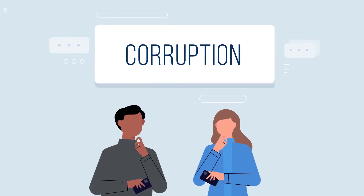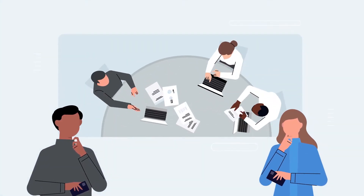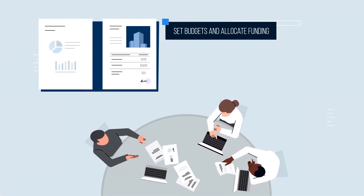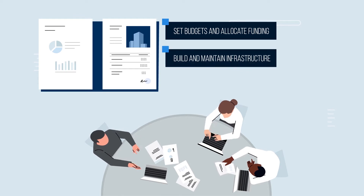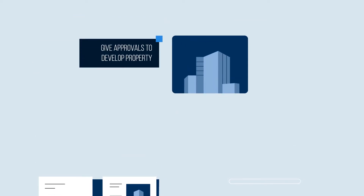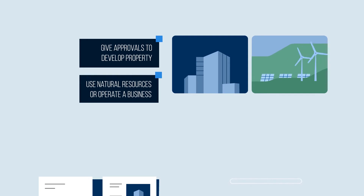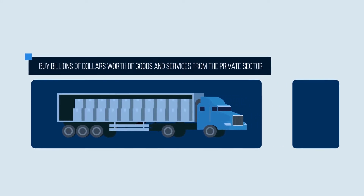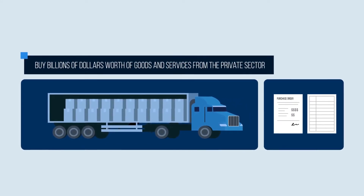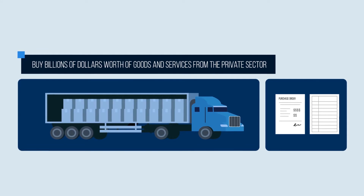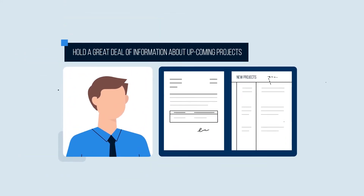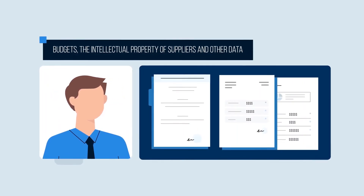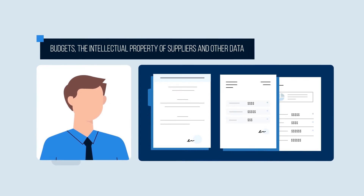But to better understand the concept, think about some of the decisions that public officials make as part of their job. They set budgets and allocate funding, build and maintain infrastructure, give approvals to develop property, use natural resources or operate a business, enforce the law, buy billions of dollars worth of goods and services from the private sector by allocating tenders, contracts and purchase orders. They also hold a great deal of information about upcoming projects, budgets, the intellectual property of suppliers and other data that is personal or confidential.